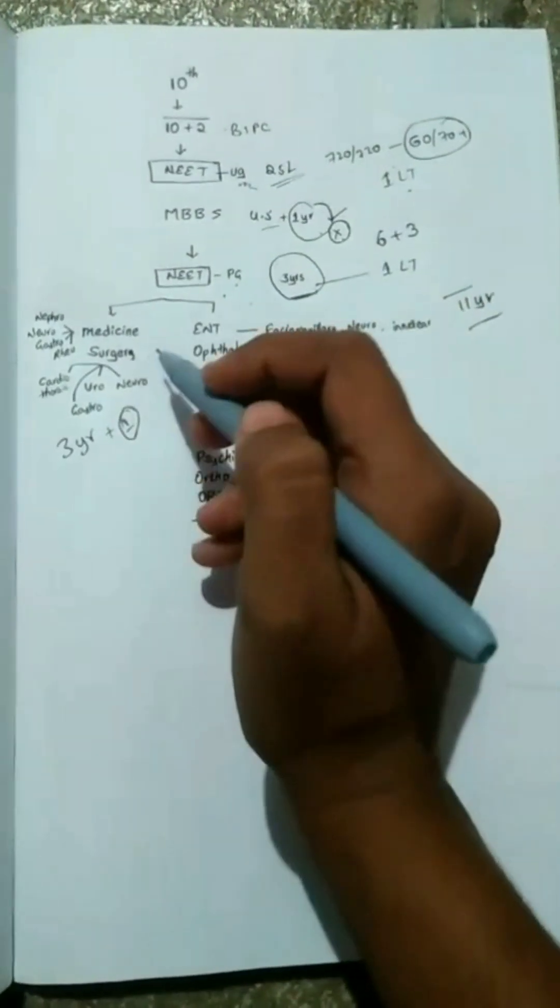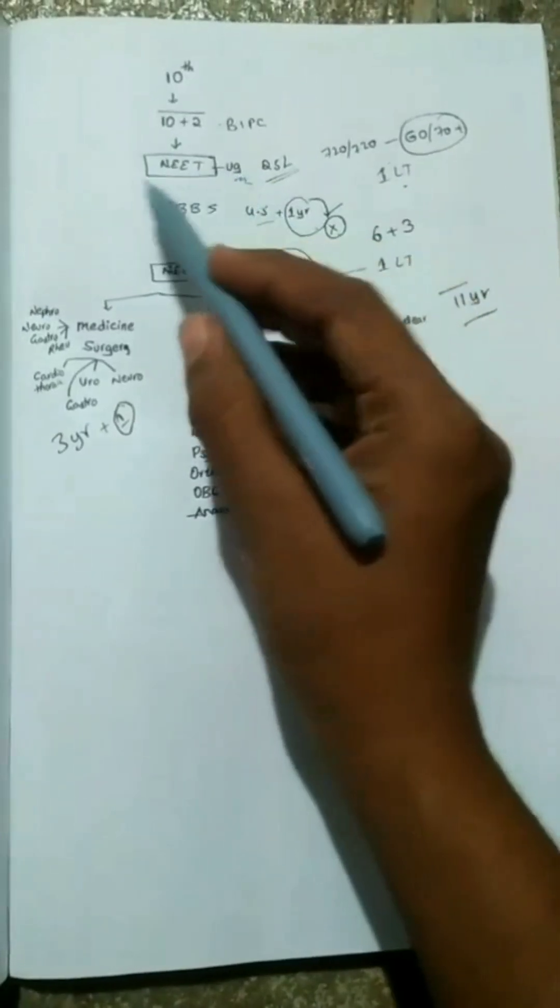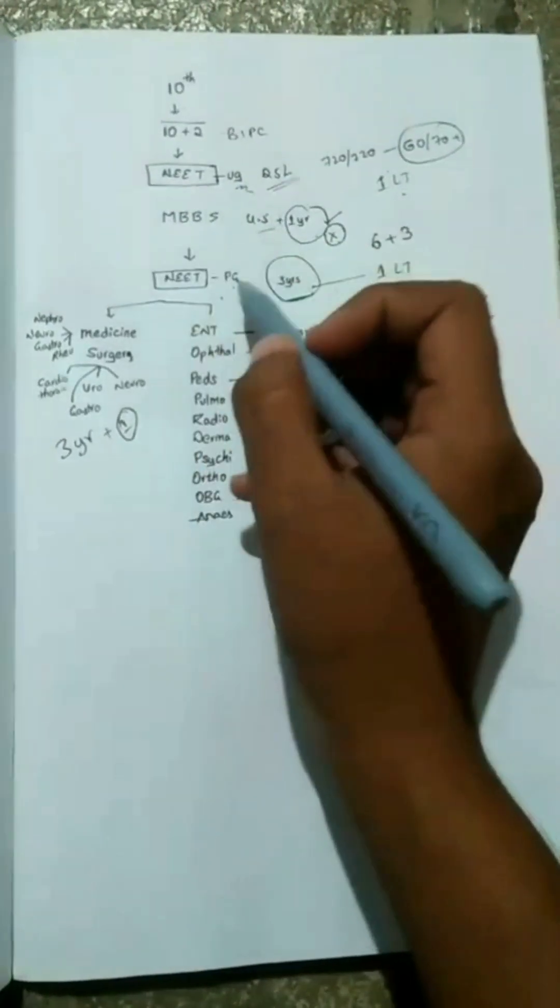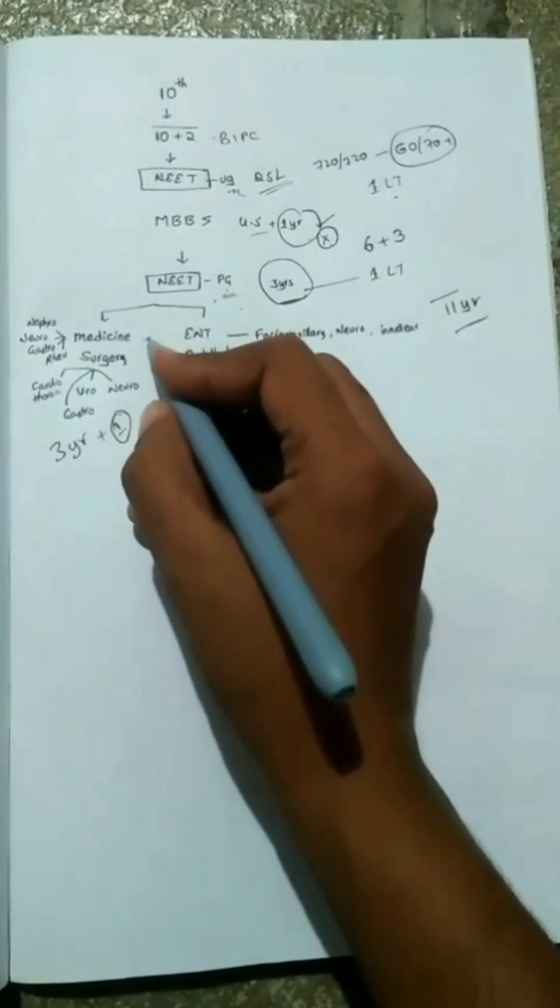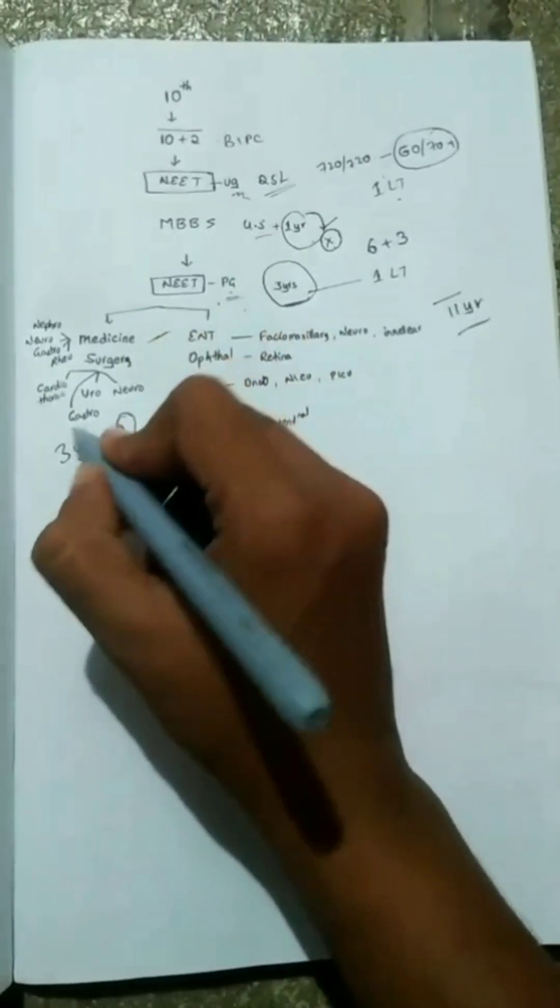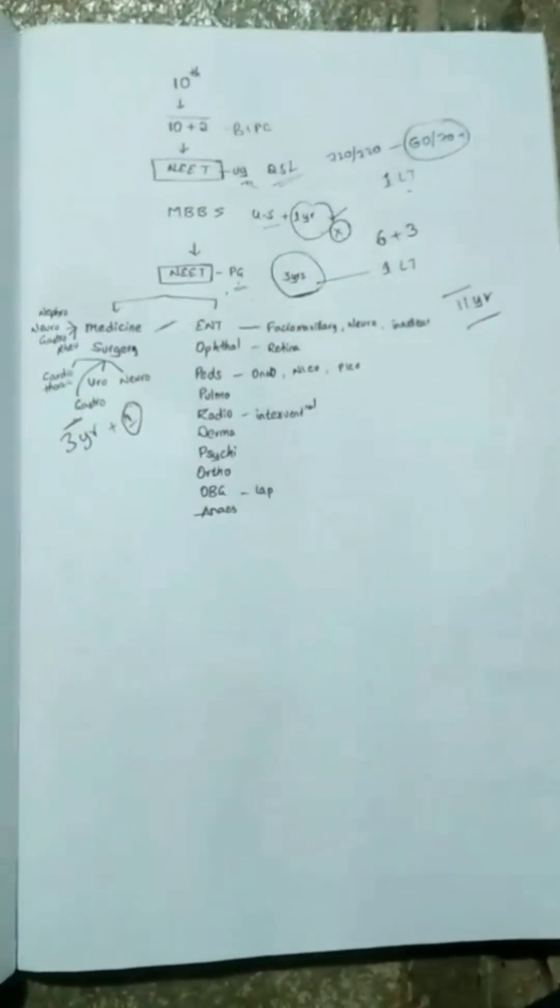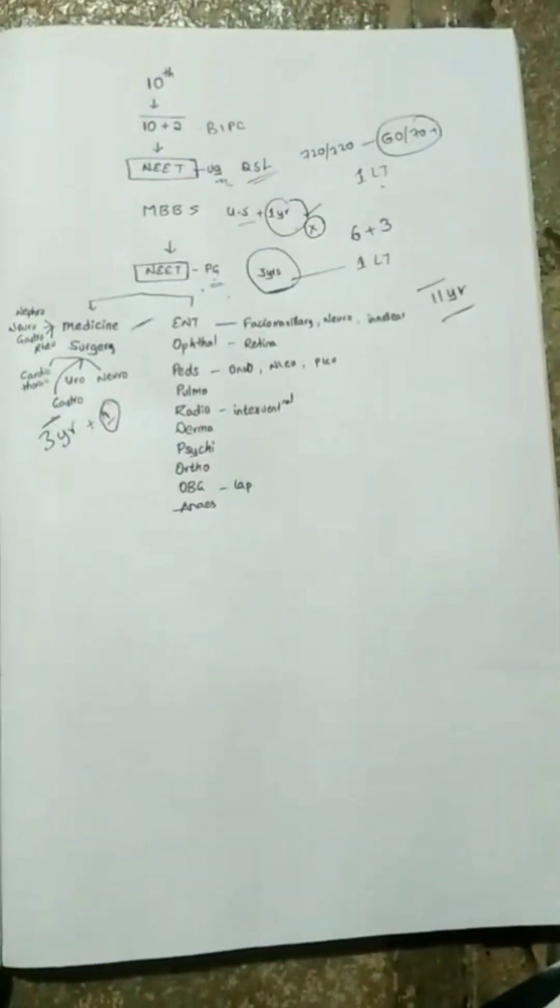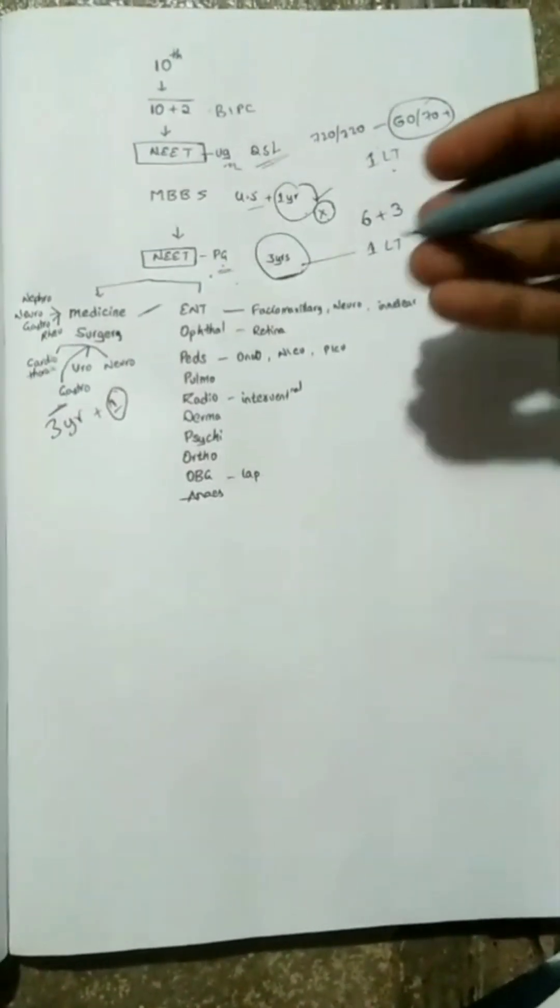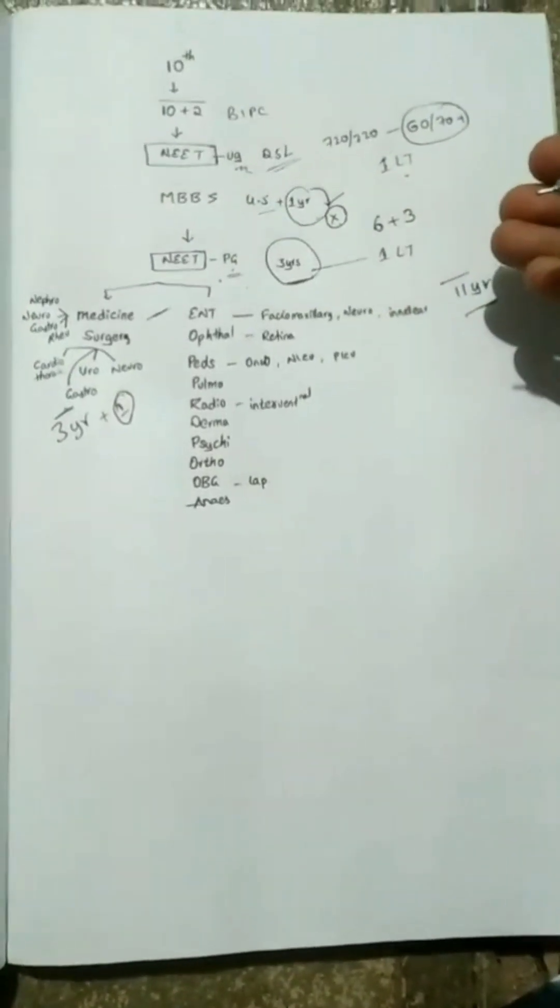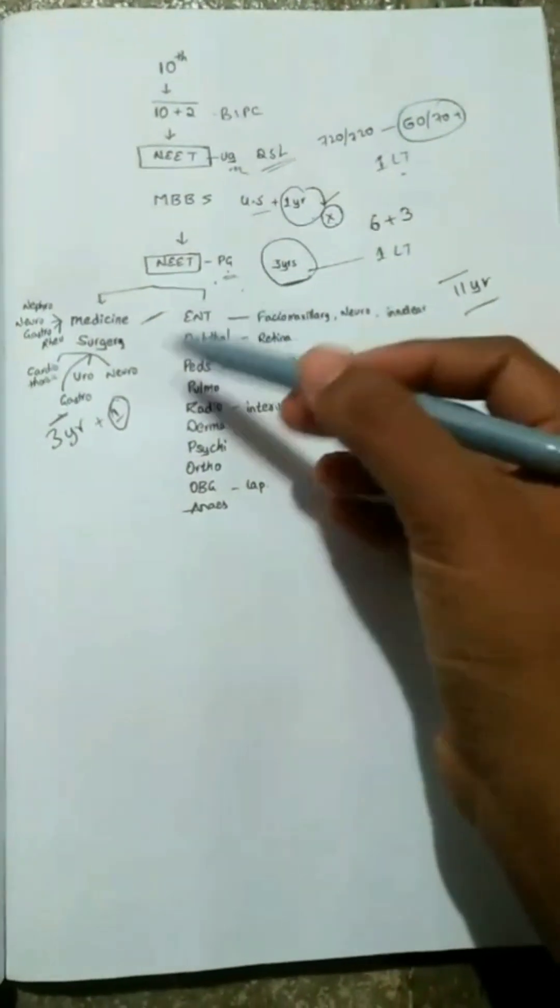See, they increase the UG seats and they don't increase PG and super specialty seats. What is the use? Here thousands of seats, like 10,000 seats will be there. Here thousand will be there. Here, like 10, 20, hundreds will be there. Here only single digit colleges will be there. See, many UG seats, all government colleges can have UG seats, but they don't have the PG seats.